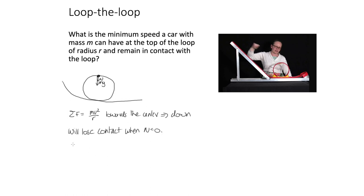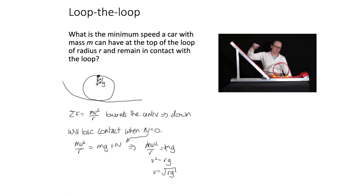The car just loses contact when the normal force is zero. So the resultant force mv squared over r equals mg plus N. Setting N equals zero gives mv squared over r equals mg, so v squared equals rg, and therefore v equals the square root of rg. This is the minimum speed at the top of the track.